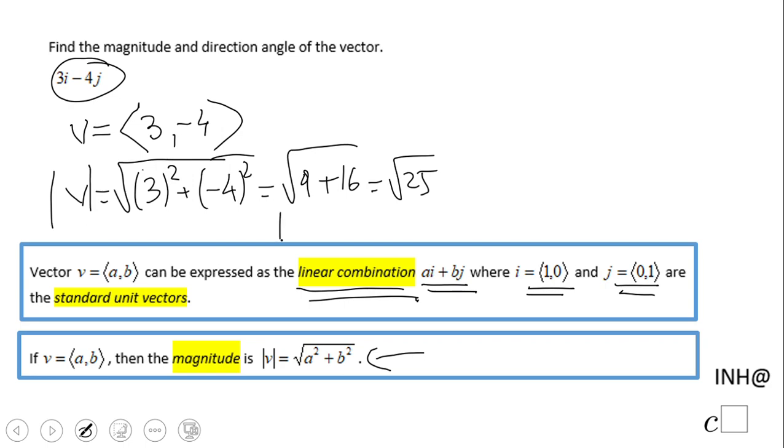Now, for finding the direction angle, my first thing is to do a sketch. I'm looking here—the vector is 3 and negative 4: 1, 2, 3; 1, 2, 3, 4. So we're in quadrant 4. I need to be careful because the angle theta is this guy.